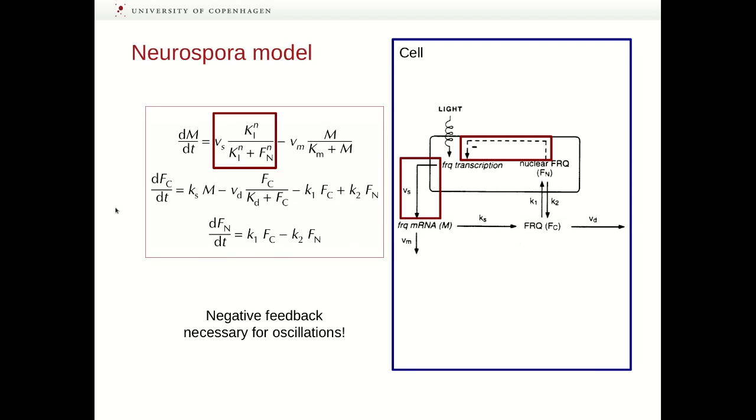In the following, we'll walk through the different elements of the three ordinary differential equations. First, in red here, you see an equation describing the transcription of the FRQ gene, but also the negative feedback provided by the nuclear FRQ protein. So you can see a Hill-type equation, where the rate of FRQ transcription is inhibited by the level of the FN protein present.